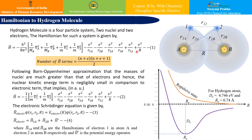The positive signs correspond to the repulsive potentials: e²/R12 is the repulsive potential between the two electrons (1 and 2), and e²/R is the repulsive potential between hydrogen atom A and hydrogen atom B. Thus, there are 10 terms in total in this Hamiltonian.